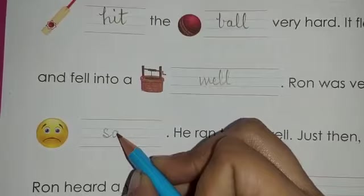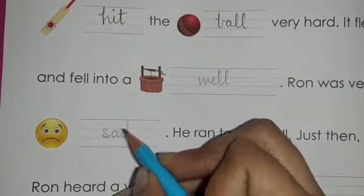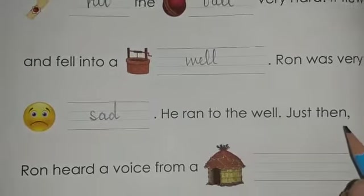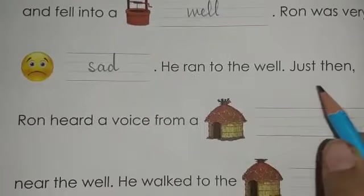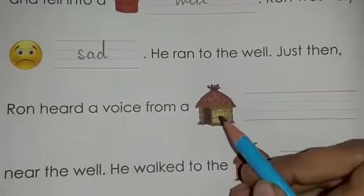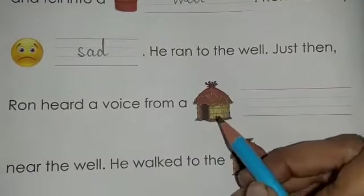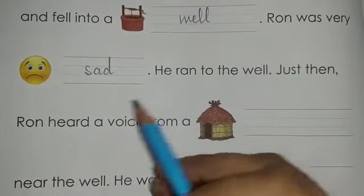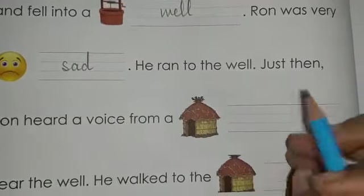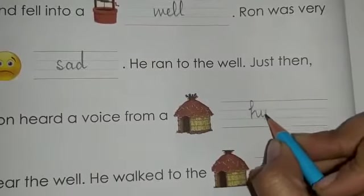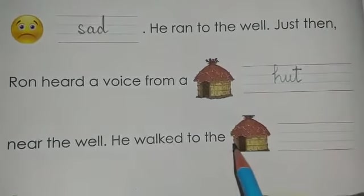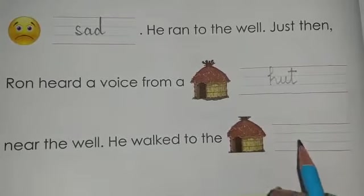Ron was very sad. This picture shows sad. Full stop. He ran to the well. Just then Ron heard a voice from a — what do you see? This is a hut. So you write down hut, H-U-T, near the well.